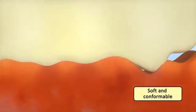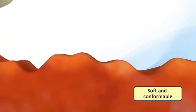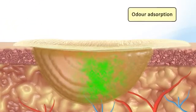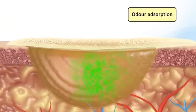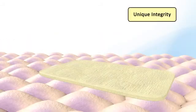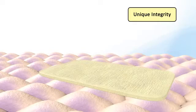Pharma-Algi F Carbon is soft and conformable, conforming to wound contours. The carbon felt absorbs offensive odor from the wound. The dressing has unique integrity, allowing removal as one piece, and due to gel formation, it does not adhere to newly formed tissues.